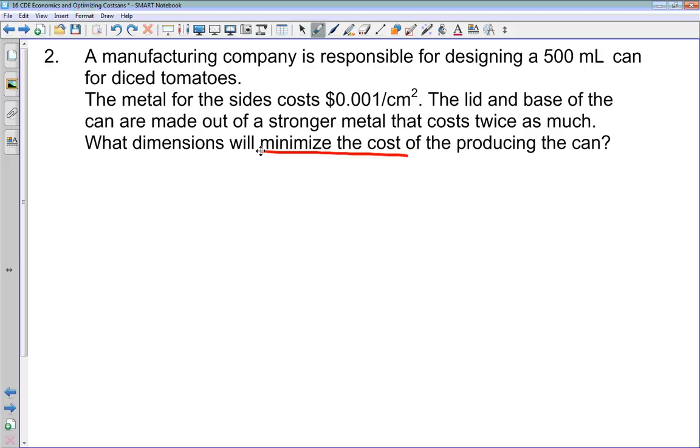We're going to need a formula for surface area. It doesn't tell us in the question what the shape of the can is. We can assume it's going to be a cylinder. So the formula for the surface area of a cylinder is 2πr² + 2πrh. That first term, 2πr², is for the lid and the base. We've got a circle on the top and the bottom. The second term, 2πrh, is for the sides.